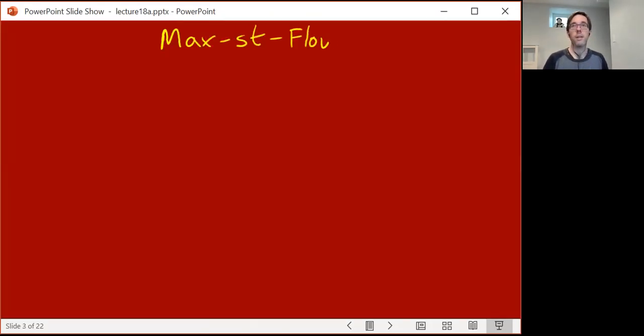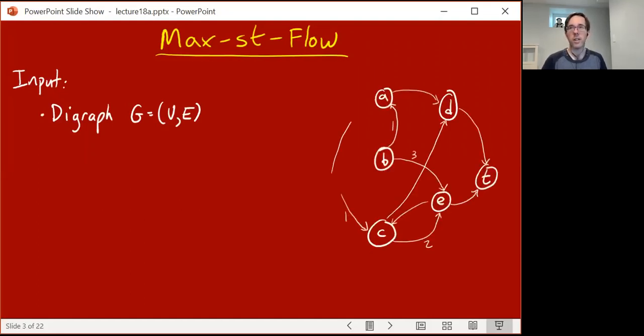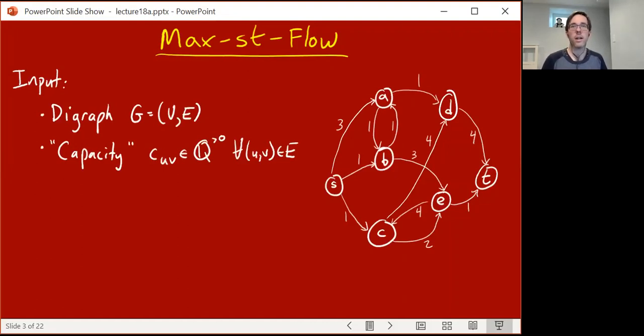Let's start with a problem, the max-st-flow problem, that genuinely is going to turn out to be just a linear programming problem. The input to the problem is a directed graph G. Here's an example. You'll notice there are some numbers written on the directed edges, and these are called capacities. These are denoted c_uv for each edge uv in the graph, and these are positive numbers. There are two special vertices called the source s, over here, and the sink or target t, over here.